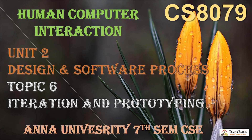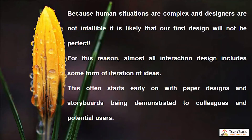Topic 6: Iteration and Prototyping. Because human situations are complex and designers are not infallible, it is likely that our first design will not be perfect. For this reason, almost all interaction design includes some form of iteration of ideas.